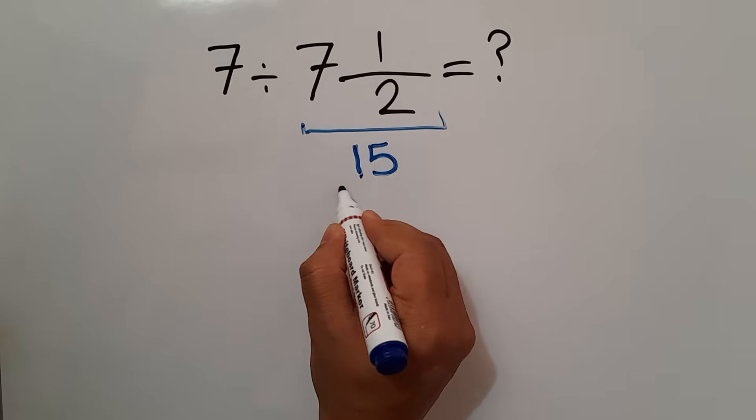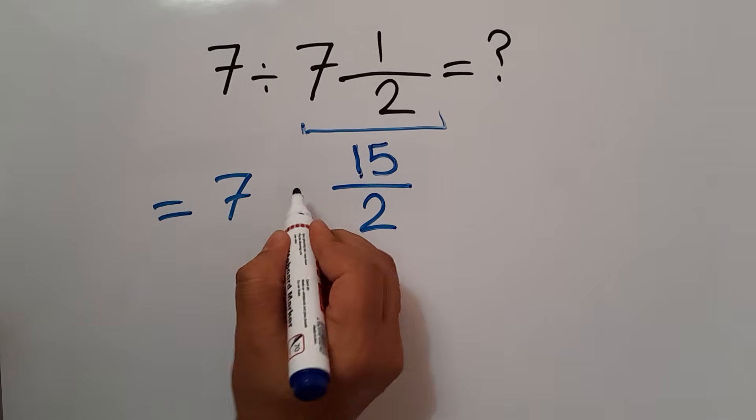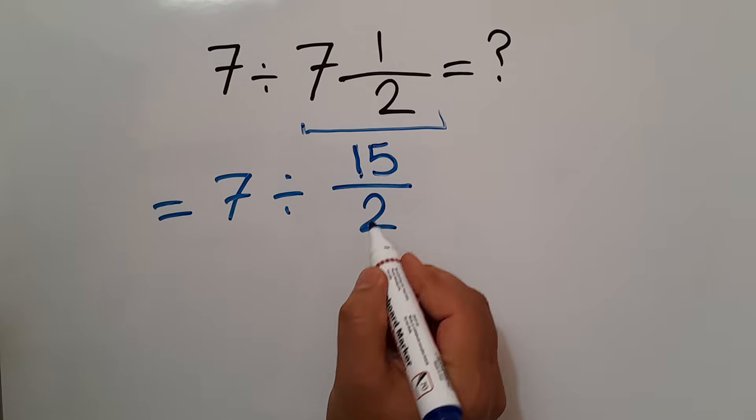So, 15 over 2, and 7 divided by this 15 over 2.